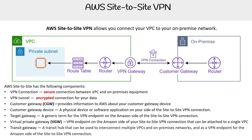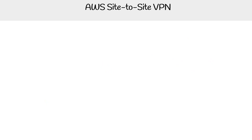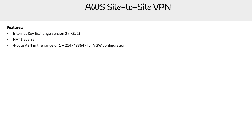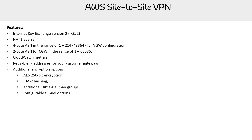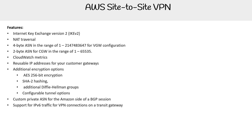One key reason to use transit gateway over a VPN gateway is that VPN gateways only support IPv4, whereas transit gateway supports both IPv4 and IPv6. Now let's get into the feature set for site-to-site VPN. We have internet key exchange version two, NAT traversal, four-byte ASN in the provided range, two-byte ASN for the CGW, CloudWatch metrics, reusable IP addresses for customer gateways, additional encryption options, custom private ASN for the Amazon side BGP session, and IPv6 traffic support for VPN connections on a transit gateway — which is an important indicator of why you'd choose one over the other.